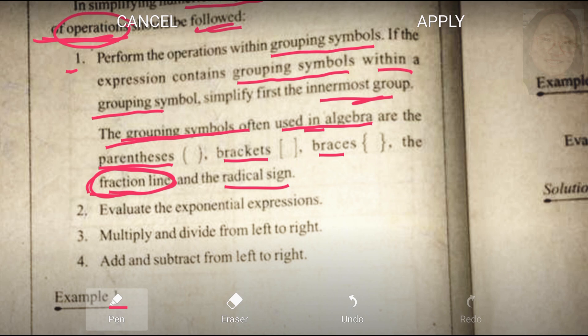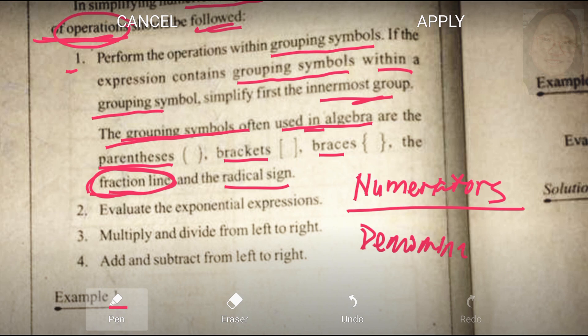Kasi, itong fraction line, bakit sya nandito sa grouping? Groupings. Kasi, meron syang group of numbers na merong numerators over denominators. Isang group po yan sya. Kaya, nandito sya sa step number 1 ng PEMDAS.